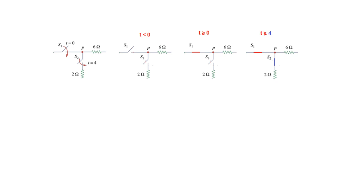Finally, there is a slightly trickier one with two switches. Look at the direction: this one is closing at t is equal to 0, but this other one is closing at t is equal to 4. Before t is equal to 0, both switches are open. At t equal to 0 or greater, S1 is closing, but S2 still remains open because it will close at t is equal to 4. Then for t greater than 4, S1 was already closed and S2 will also close. I hope this gives you an idea about various types of switches used in circuit analysis. Thank you.